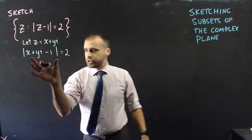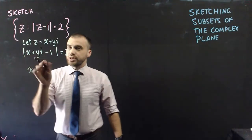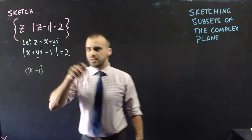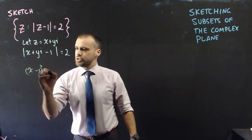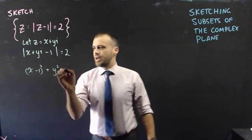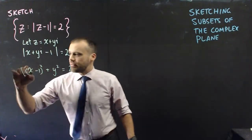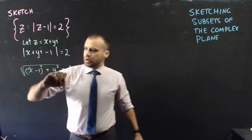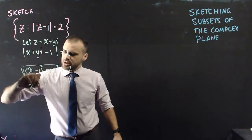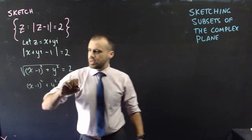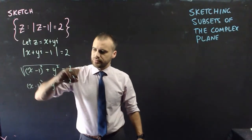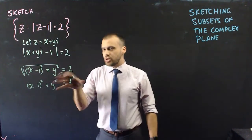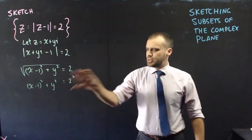We know how to find the magnitude of a complex number. We square the real component (x − 1), square the imaginary component y, and set the square root equal to 2. So we get (x − 1)² + y² = 2² = 4. That looks familiar — that's the equation of a circle!